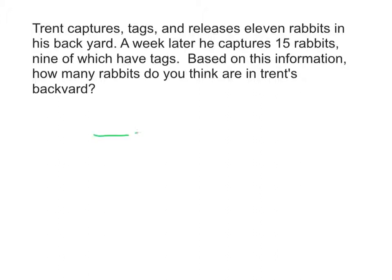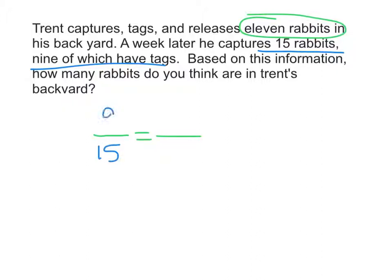To do this we're going to write a proportion. I'm going to focus on the information when he comes back a week later. So when he comes back he captures 15 rabbits, nine of which have tags. I'm going to put that information in my proportion — nine out of 15, where the top represents tagged animals and the bottom represents totals.